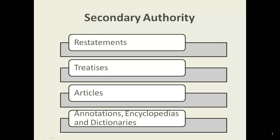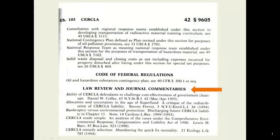Like primary authority, secondary authority can exist in print, online, or both formats. This does not affect its level of persuasiveness. You have already had a glimpse of how to find secondary authority through annotated codes from the previous lecture when we looked at the USCA.